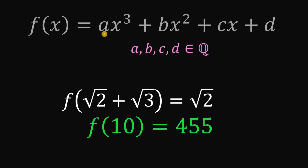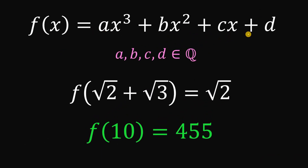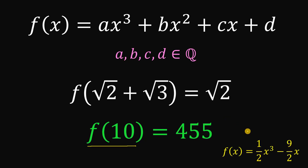Therefore, given f of x equals ax cubed plus bx squared plus cx plus d, where a, b, c, and d are rational numbers, and f of square root of 2 plus square root of 3 equals square root of 2, our answer is 455, which is the equivalent of f of 10. Our function is equivalent to one-half x cubed minus nine-halves x. And as always, we are done.